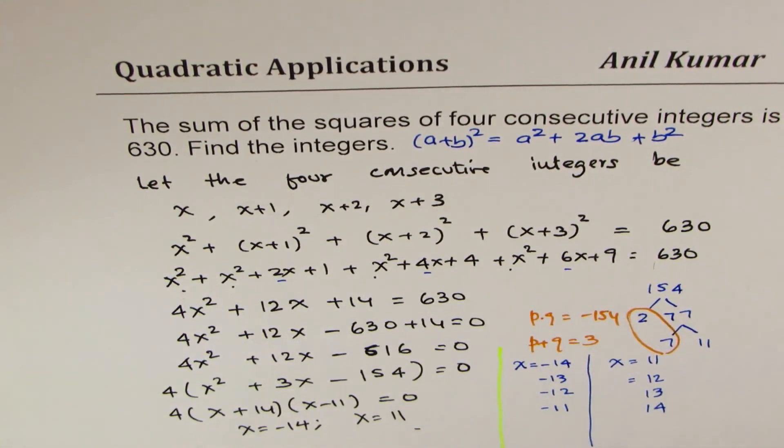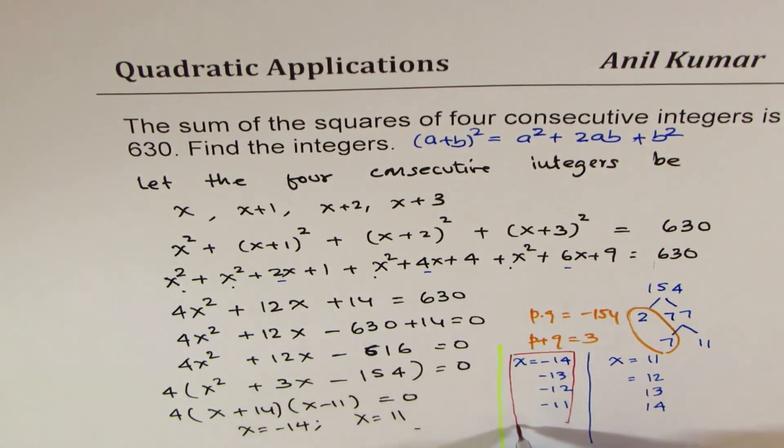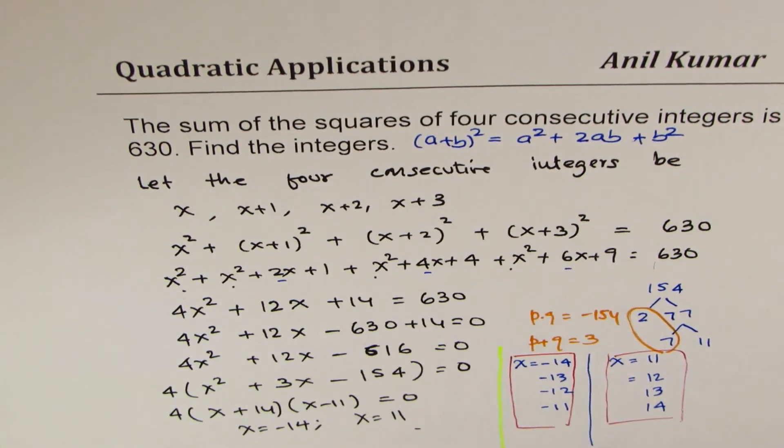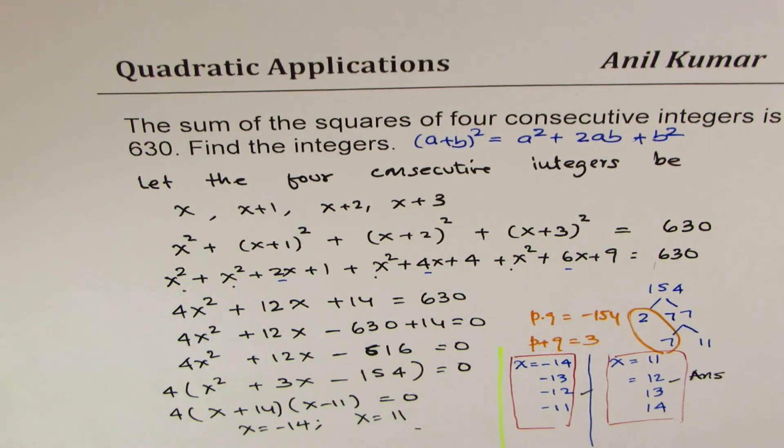So these are the two sets which form the four consecutive integers. Sum of squares of 4 is 630. So we get two sets here and these are our answers. So we get our answer as these two, one set or the other one. So that is how you could actually solve it.